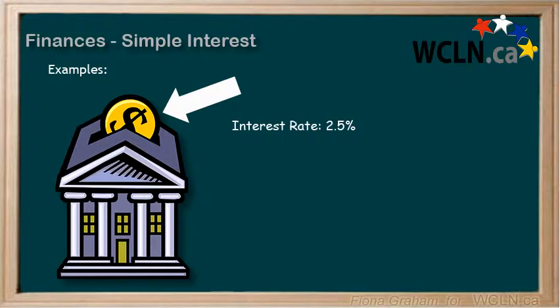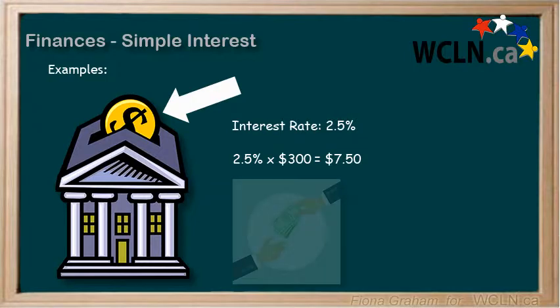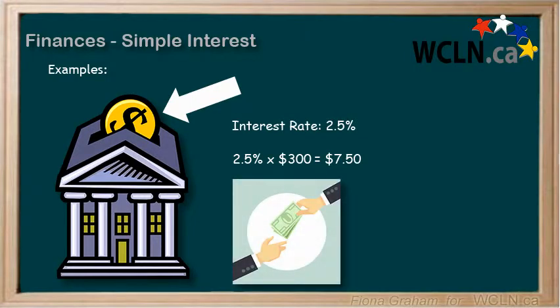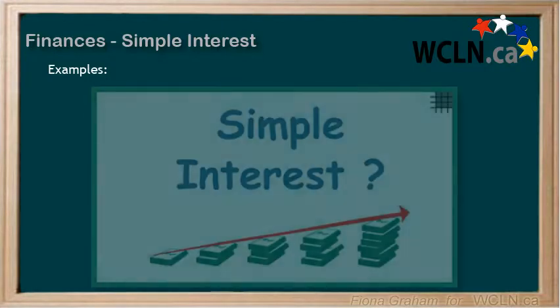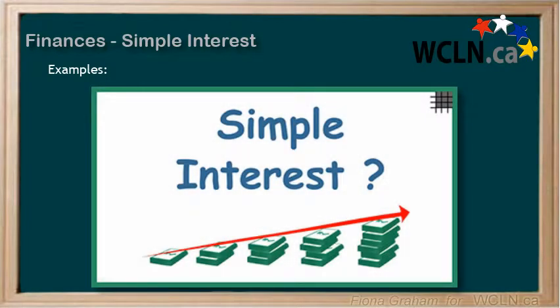The equation for this calculation would look like this: 2.5% times $300, which would give us $7.50. Now, $7.50 is not a lot of money, but $300 isn't really a lot of money either. But the $7.50 is being given to you for free and with no risks. The more money you invest, and the longer you invest it, the more money you will make.